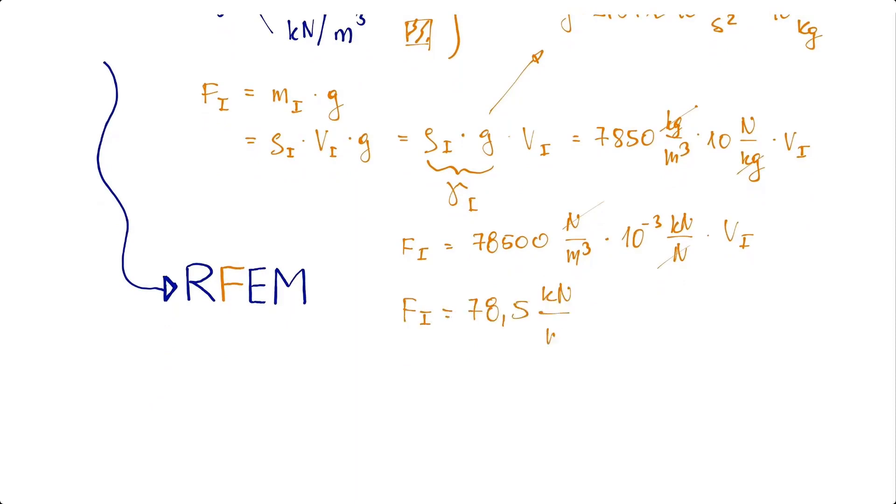For this reason, a steel cross section has a weight density of 78.5 kilonewtons per cubic meter.